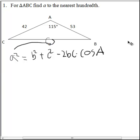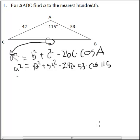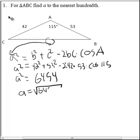That's our goal. And we know B, C, and cosine of A. So it's really just a matter of substitution at this point. 42 squared plus 53 squared minus 2 times 42 times 53 times the cosine of 115. A squared equals all that. So you just punch this in your calculator. A squared equals 6,454. And to find the length of A, you just take the square root of 6,454.